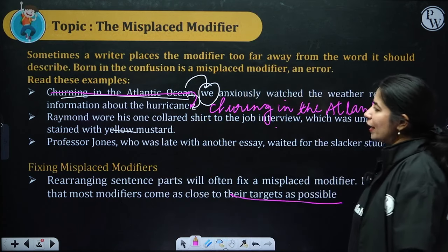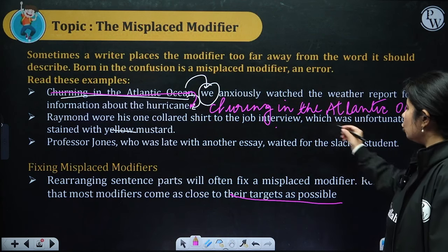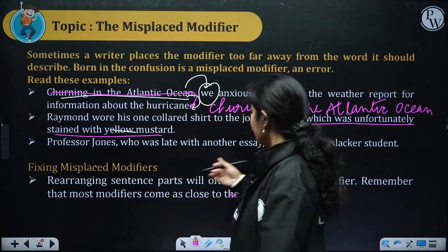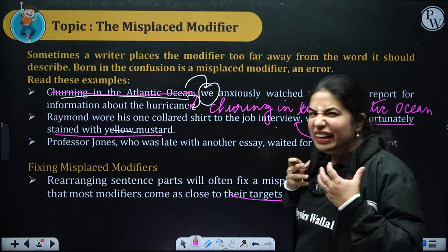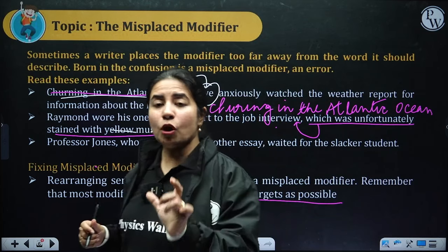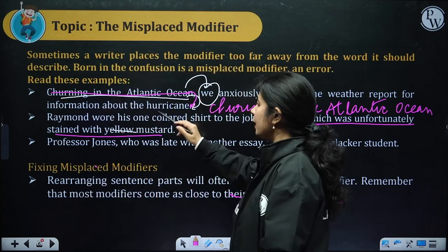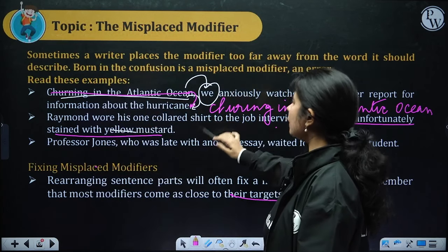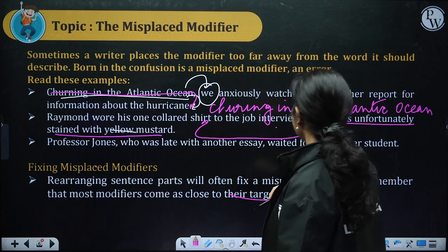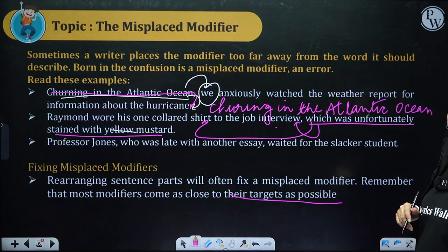'Raymond wore his one-colored shirt to the job interview which was unfortunately stained with yellow mustard.' Here, 'which was unfortunately stained with yellow mustard' — stained means a dhabba laga hua tha — is pointing to the interview? No, the interview cannot be stained. It was the shirt that was stained. To correct: 'Raymond wore his one-colored shirt which was unfortunately stained with yellow mustard to the job interview.' Move the modifier near its target — the shirt.